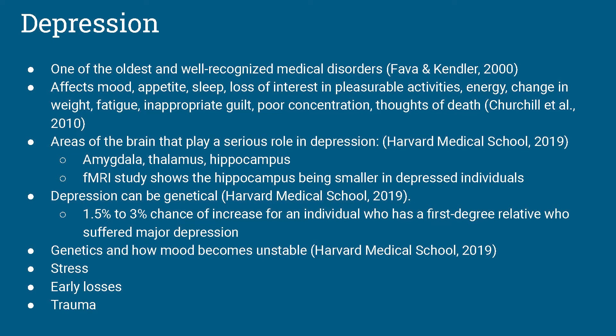An article from Harvard Medical School suggests that depression is caused by chemical imbalance and that the issue is much more complex than just stressful life events. The areas of the brain that play a serious role in depression are the amygdala, the thalamus, and the hippocampus. An fMRI study showed that the hippocampus is actually smaller in depressed individuals. Harvard Medical School also suggests that genetics can play a role in depression, with a 1.5 to 3% greater chance for an individual who has a first-degree relative who suffered from major depression.